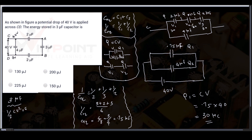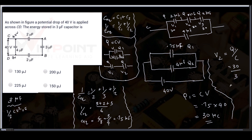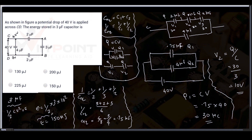We need to find the energy stored in the 3 microfarad capacitor. First find V2: V2 equals Q by C equals 30 by 3 equals 10 volts. Now the energy equals half into C into V squared equals half into 3 into 10 squared, which equals 150 microjoules. That is our answer.